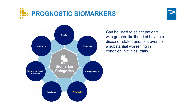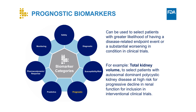These can be used for patient stratification or enrichment in clinical trials. An example of the use of prognostic biomarkers utilized for enrichment is total kidney volume, which may be employed to select patients with autosomal-dominant polycystic kidney disease at high risk for progressive decline in renal function for inclusion in interventional clinical trials.